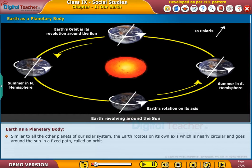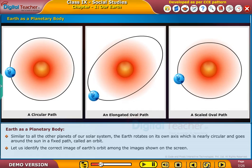Similar to all the other planets of our solar system, the Earth rotates on its own axis which is nearly circular and goes around the sun in a fixed path called an orbit. Let us identify the correct image of Earth's orbit among the images shown on the screen.